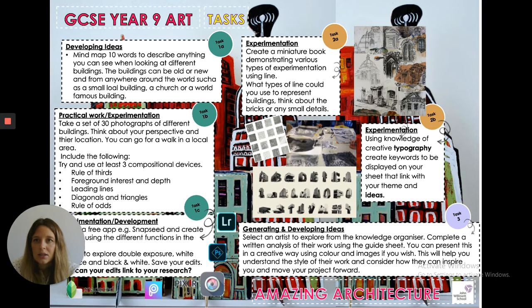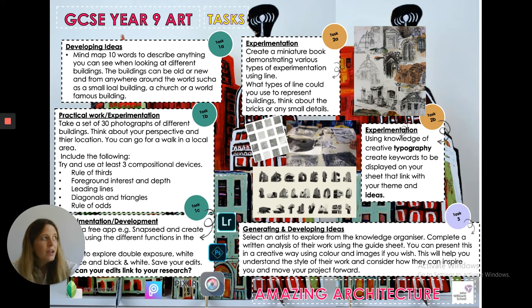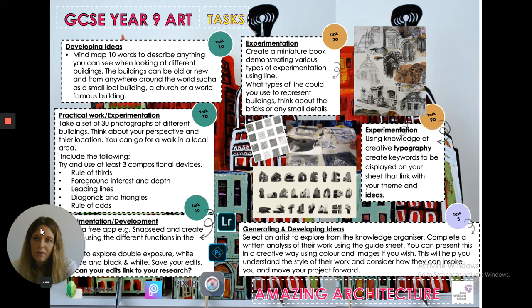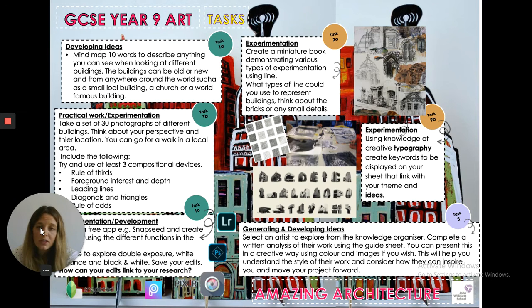The next task is to take a set of 30 photographs. Go for a walk in your local area, or even into Birmingham City Centre if you can. Take 30 photographs of buildings, thinking about perspective and the compositional devices listed on the organiser. Photography is a way of recording that you do get marks for in Art, so don't think it's only for photography students.